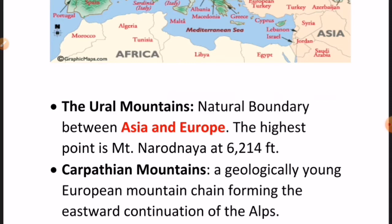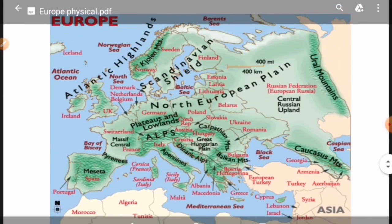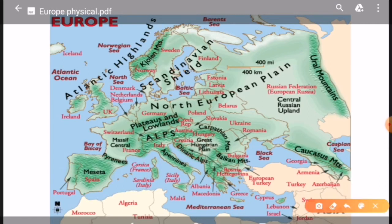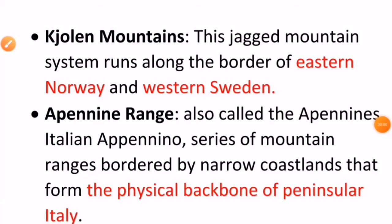The next important mountain range is the Carpathian Mountains. These are geologically young European mountains that form the eastward continuation of the Alps. You can see in this map that the Alps are here, and the Carpathian Mountains are the continuation of the Alps extending eastward.